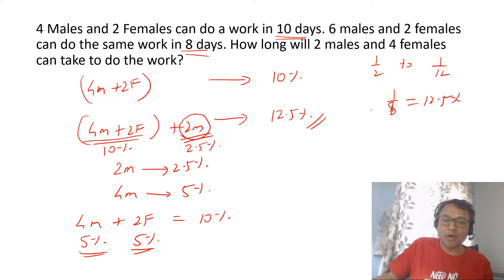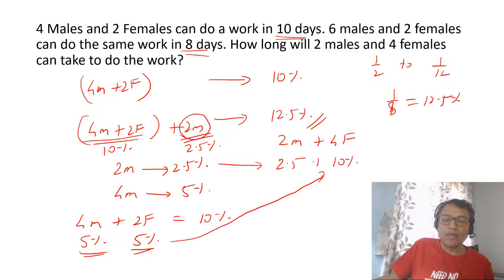This is per day work. Now we want two males and four females. We know two males will do 2.5 percent work. Four females will do 10 percent work because two females is 5 percent, so four females is 10 percent. Together they do 12.5 percent, which is one upon eight. That means the time taken will be 8 days to complete the work.